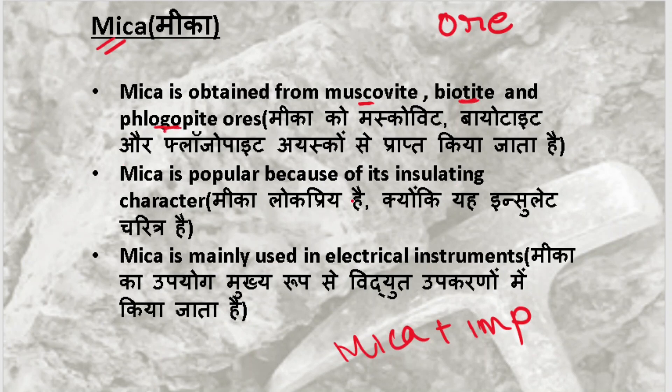Mica is popular because of its insulating character. It doesn't allow electricity to pass through. That's why Mica is used in electrical instruments. For example, in a switch box in your house, Mica covers the surface outside so that electricity doesn't come out. That's why it is made from Mica.